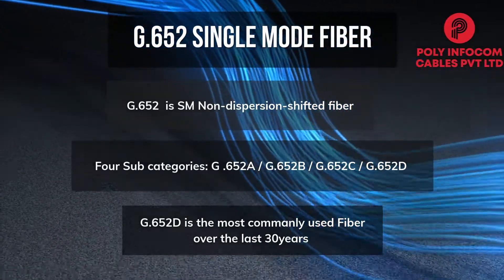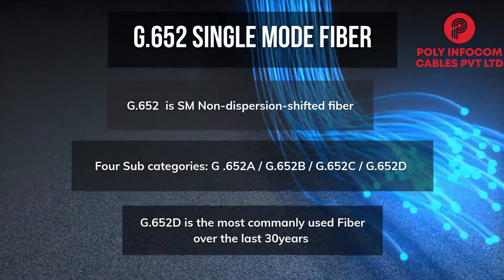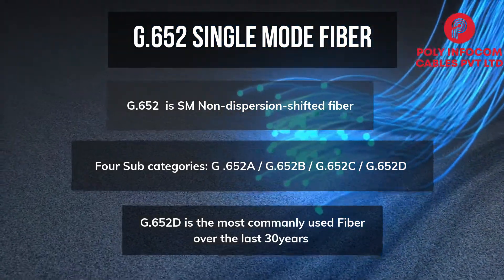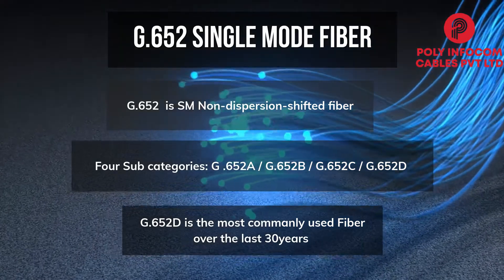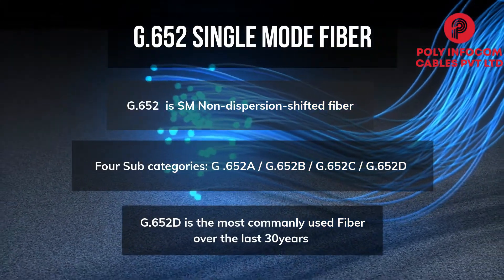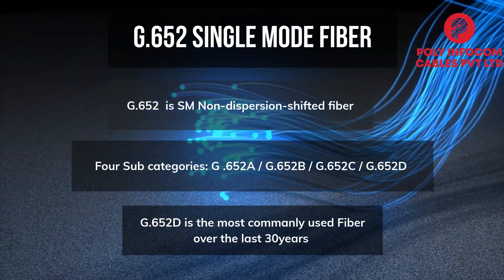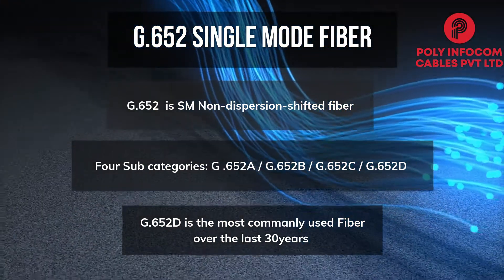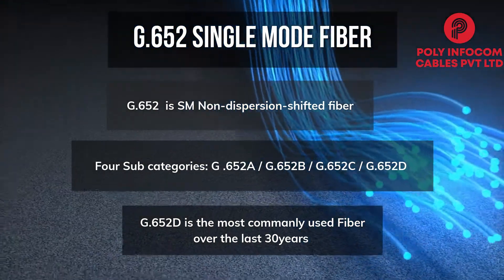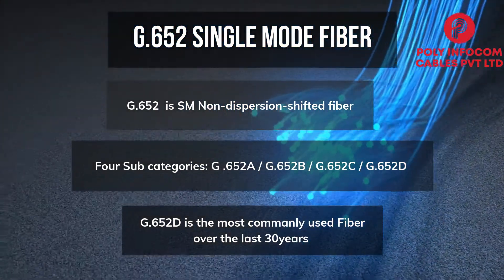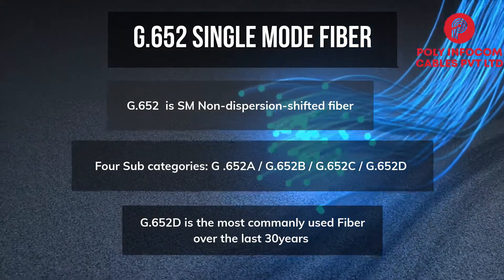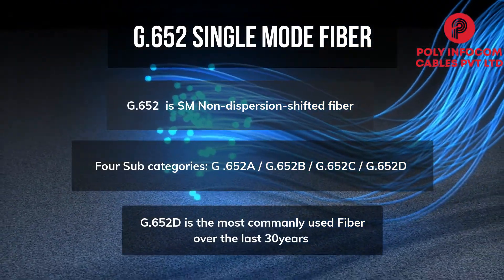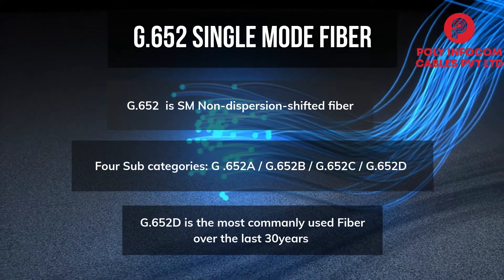G652 category covers single-mode non-dispersion shifted fibers. These are sub-categorized into G652A, G652B, G652C, and G652D fibers. G652D fibers are the most commonly used fibers because they offer respectable attenuation and lower losses during data transmission.